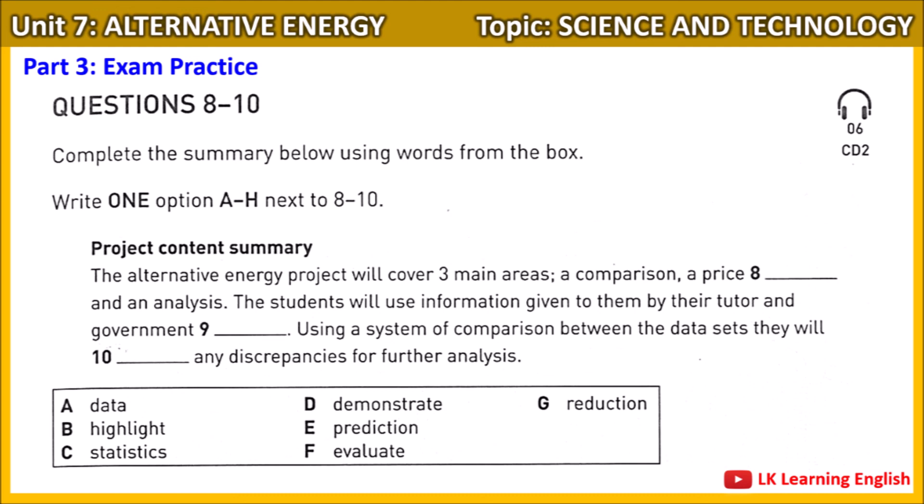Now, what data are you going to use and what approach will you use for the analysis? Now that's something we do agree on. We want to use the reports from our last lecture and some statistics from the government environment and energy department. In terms of analysis, we're going to use a cross-referencing method where we compare each of the government reports with the Robertson report and highlight any differences. Then we'll analyze these to see why the differences exist and where more research needs to be done.